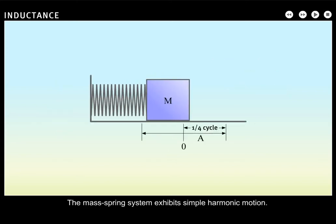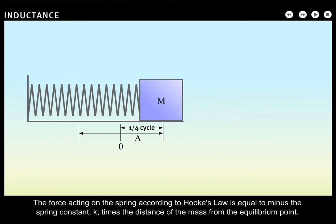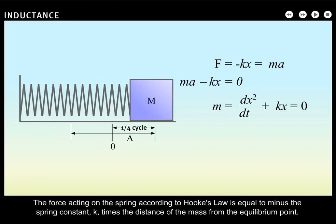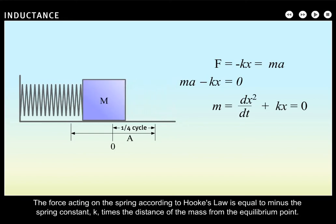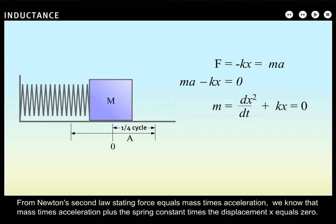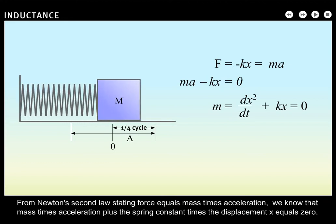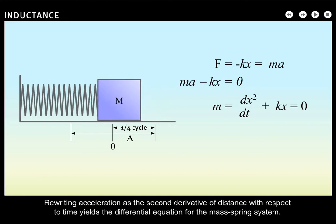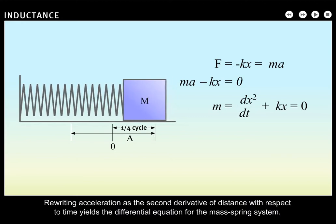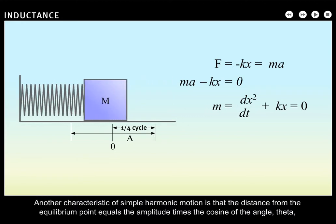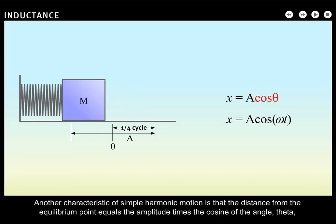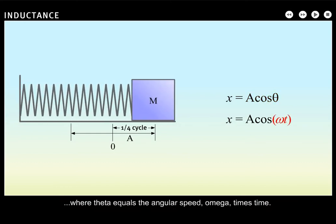The mass-spring system exhibits simple harmonic motion. The force acting on the spring, according to Hooke's Law, is equal to minus the spring constant K times the distance of the mass from the equilibrium point. From Newton's second law, mass times acceleration plus the spring constant times the displacement X equals zero. Rewriting acceleration as the second derivative of distance with respect to time yields the differential equation for the mass-spring system. Another characteristic of simple harmonic motion is that the distance from the equilibrium point equals the amplitude times the cosine of theta, where theta equals the angular speed omega times time.